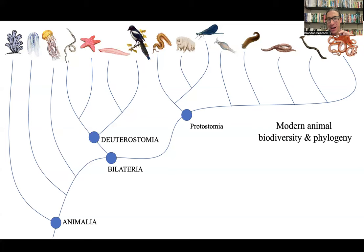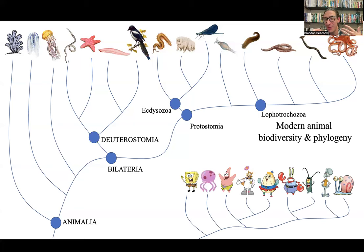When I see an animal phylogeny at the scale of all of Animalia, I can't help myself — there are a couple more clades important to animal biodiversity: Ecdysozoa is one, Lophotrochozoa — which is very fun to say — is another. When I see this giant phylogeny of animals, I always think of SpongeBob, and I think the animal diversity on SpongeBob is pretty impressive for a popular TV show.